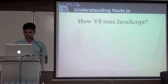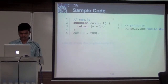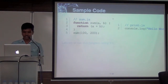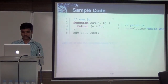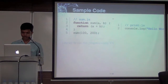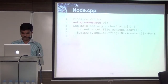How does V8 run JavaScript? I have two programs here. Number one, sum.js — it simply has a function that takes two arguments, sums them, and returns. There's another function on the right side which simply prints 'hello world' to the console. We'll see how to run these two sample programs using V8.